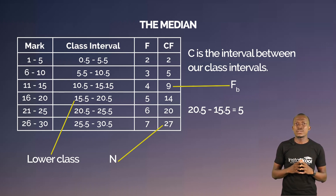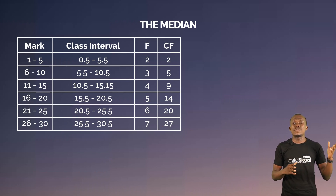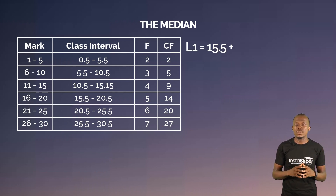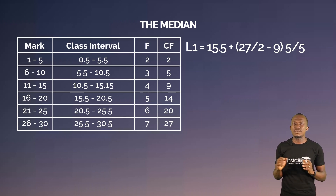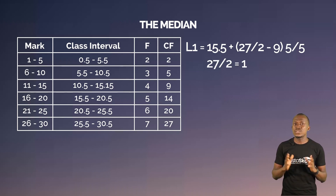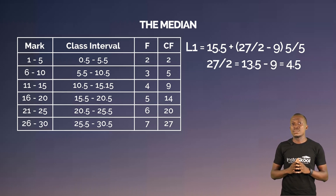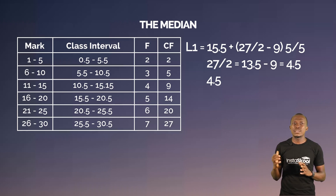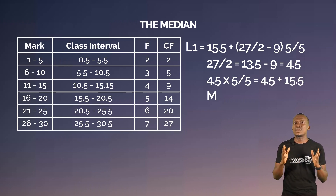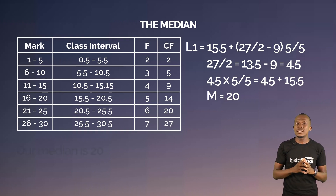Let's put this into our formula. We do what is in the bracket first: 13.5 minus 9 gives us 4.5. Then 4.5 times 5 divided by 5 gives 4.5, and we add that to 15.5. Our median is 20. Quite simple, isn't it?